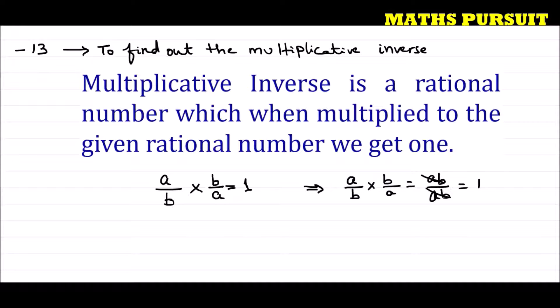For example, if the given number is 2 upon 3, then we can say that the multiplicative inverse of 2 upon 3 is 3 upon 2. We just need to reverse the thing — the denominator will become the numerator and the numerator will become the denominator. So 2 upon 3 into 3 upon 2 is equal to 6 upon 6, which is 1. That means the multiplicative inverse of 2 upon 3 is 3 upon 2.